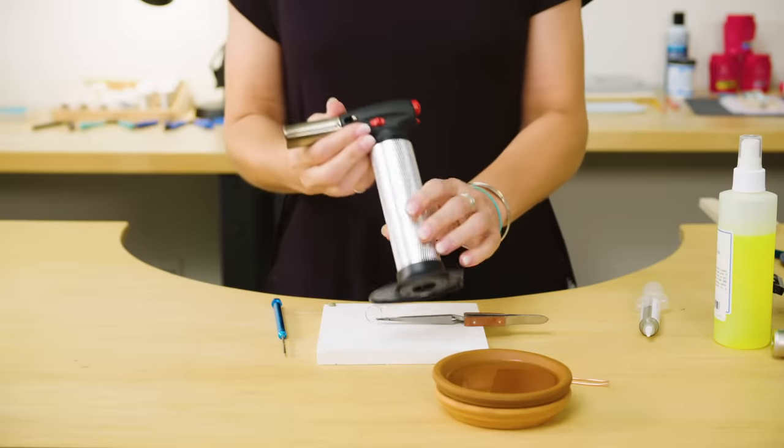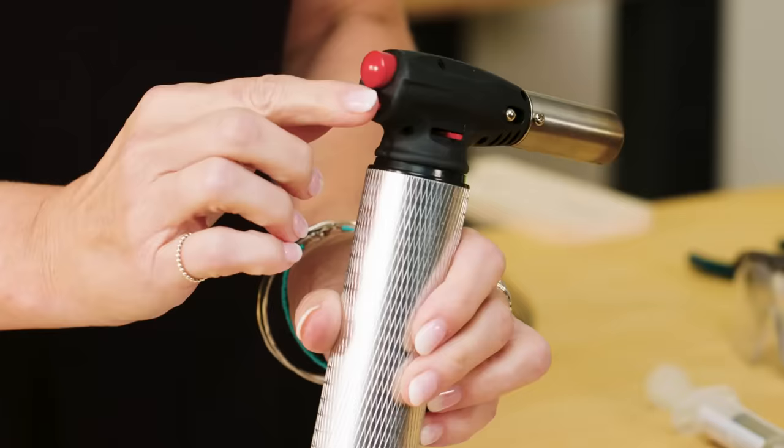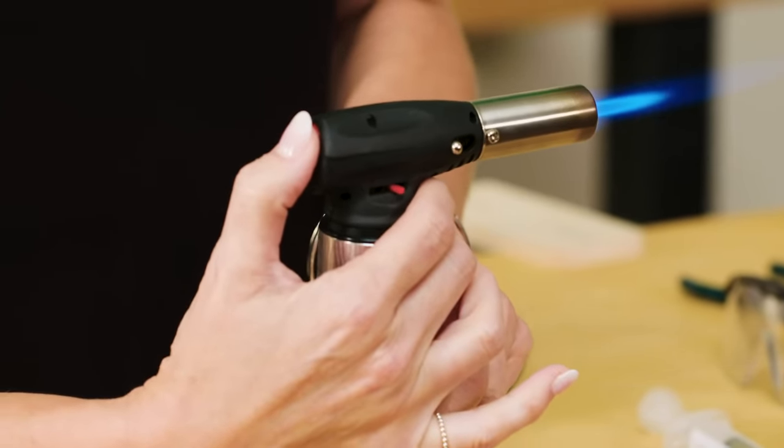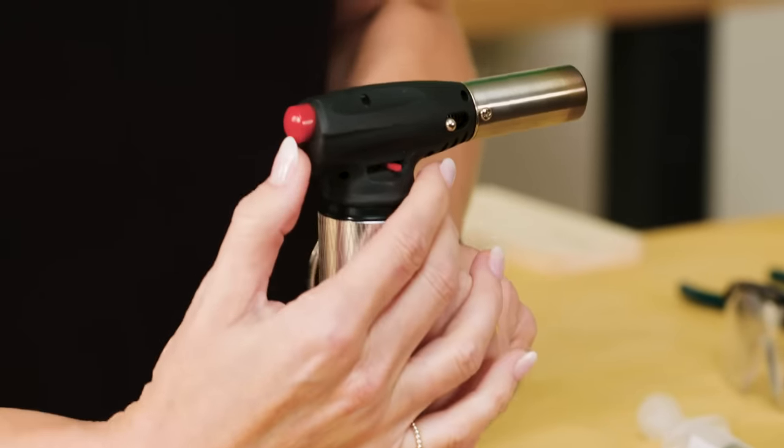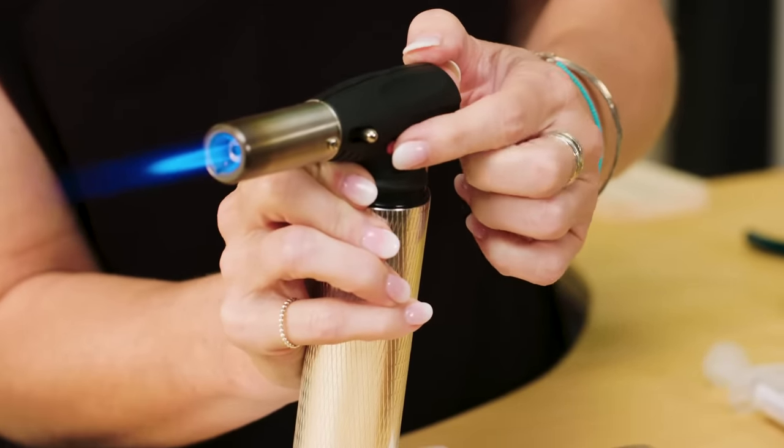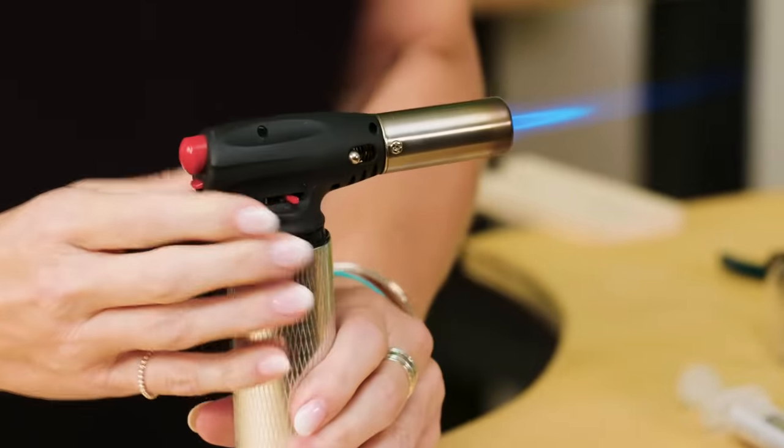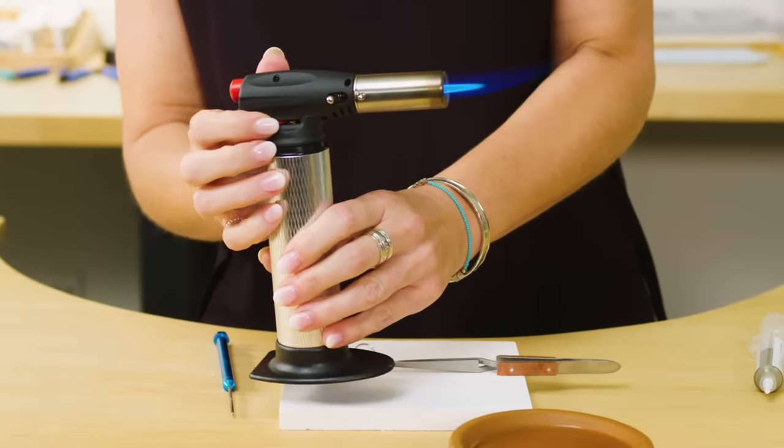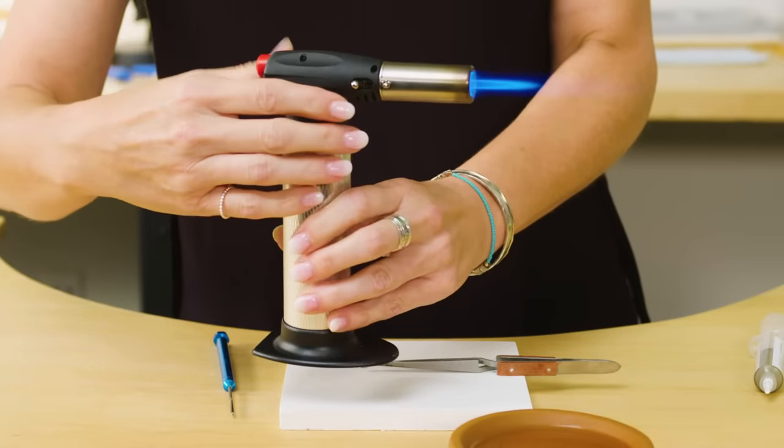Now, this is your torch. There's a few things you need to know about this torch in order to use it. Right here, this is your safety, so you need to pull that down. When you pull that down, you can then press this button, which lights the torch. If I let go of that button, it turns off. So what you need to do is pull down the safety, press the button to turn it on, and then on the other side, there's a little button that you pull back, and that is your continuous flame, so I can let go and my torch will keep going. On this side, I have the little high-low button, which makes it lower or higher. Up and down. Those are all the elements of the torch.